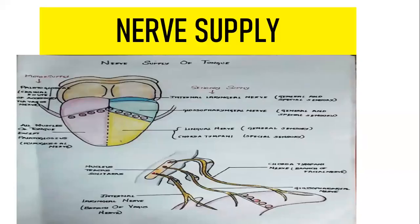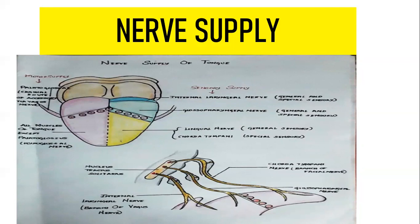Now nerve supply — important for your practicals especially. Your motor supply is very simple: all muscles of the tongue are supplied by your hypoglossal nerve, except palatoglossus. Palatoglossus is supplied by the cranial root of accessory via vagus nerve. So: all muscles of tongue supplied by hypoglossal nerve except palatoglossus, which is supplied by cranial root of accessory via vagus nerve.